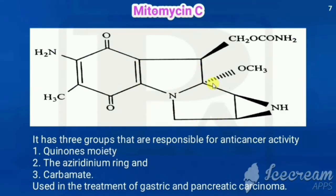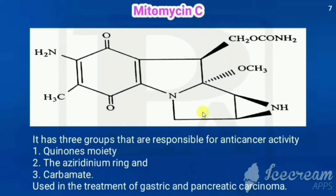This is the structure of Mitomycin C. It has two nitrogens and four rings, which is why it is called di-azza tetracycline. Di-azza means having two nitrogens, and tetracycline means having four rings — one six-membered, two five-membered, and one three-membered ring.